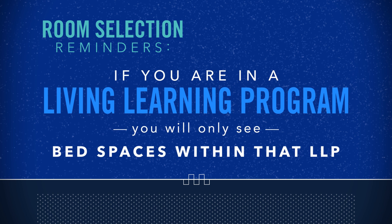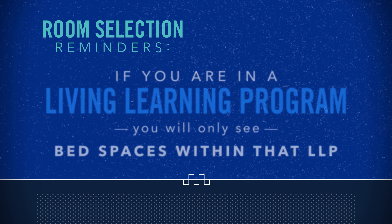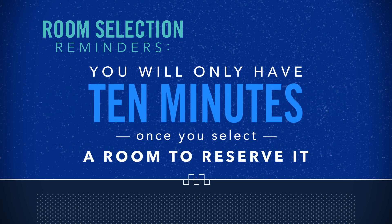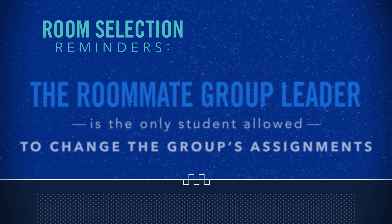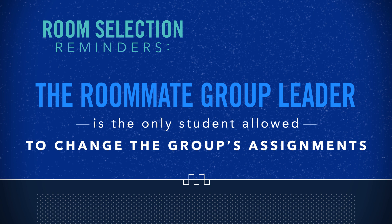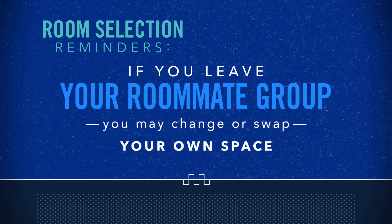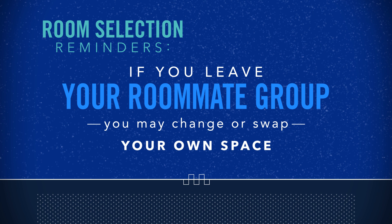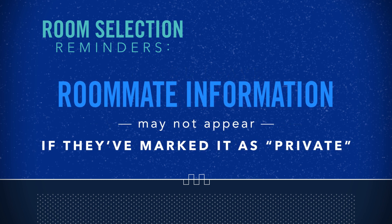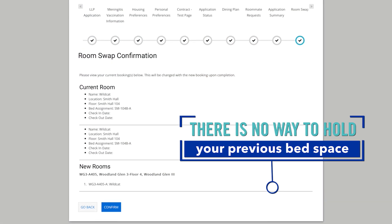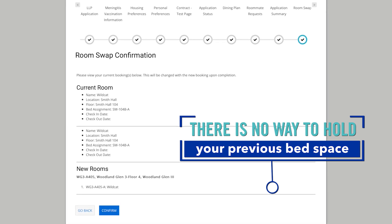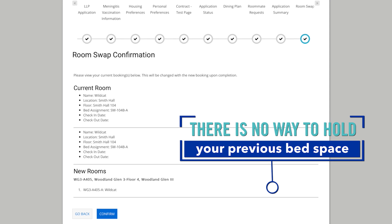Some important reminders: if you are in a living learning program, you will only see bed spaces within that LLP. You will only have ten minutes once you select a room to reserve it and pull in any confirmed roommates. If you have a roommate and your group wishes to stay together but select a different unit, your roommate group leader is the only student allowed to change the entire group's assignments. If you choose to no longer be part of the roommate group, you may change or swap your own space. If your roommate's information does not appear on the application summary page, it means your roommate marked their information as private. You may contact the campus housing office and they will be able to provide you the student's name and UK email address. If you select a new bed space through room swap, your original bed space will be cancelled. You can go through room swap again to see if you can get back into your previous bed space, but there's no guarantee it will still be available.